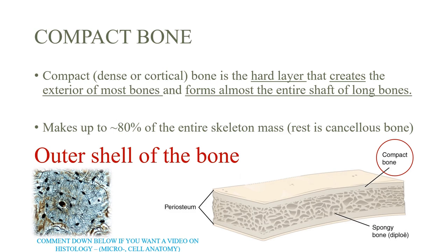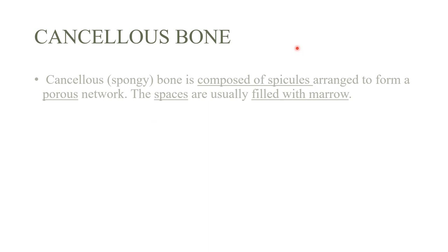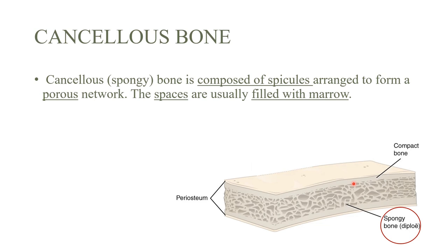Next up is cancellous bone, which is a bone type made of sinuses or pores — you can call it spongy or porous bone. Those spaces are mostly filled with bone marrow. The spongy bone sits between two slabs of compact bone.